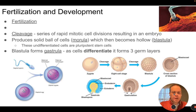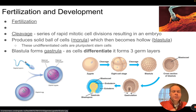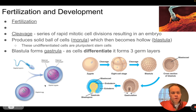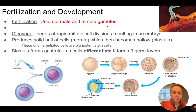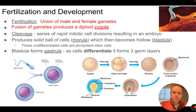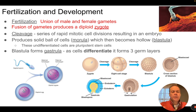Sperm and egg cells are the gametes in animals. A sperm cell is haploid — in humans it has 23 chromosomes. The egg cell is also haploid with 23 chromosomes. When they combine during the process we call fertilization, they form a cell called the zygote. The zygote is diploid — it has the full set of chromosomes, half from the sperm and half from the egg — and it can go on to develop into an embryo, a fetus, and a new organism.